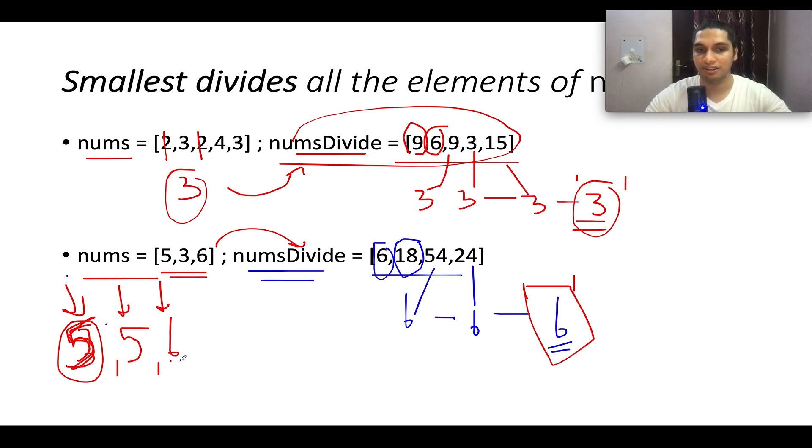Next we check 6 divide 6 or not. Yes, 6 divides 6. That means 2 deletions are needed in this entire array such that whatever remaining elements are there, the smallest of those remaining elements completely divides all the elements of nums divide array. And the answer in this case, 5, 5, 6 would have been 2.